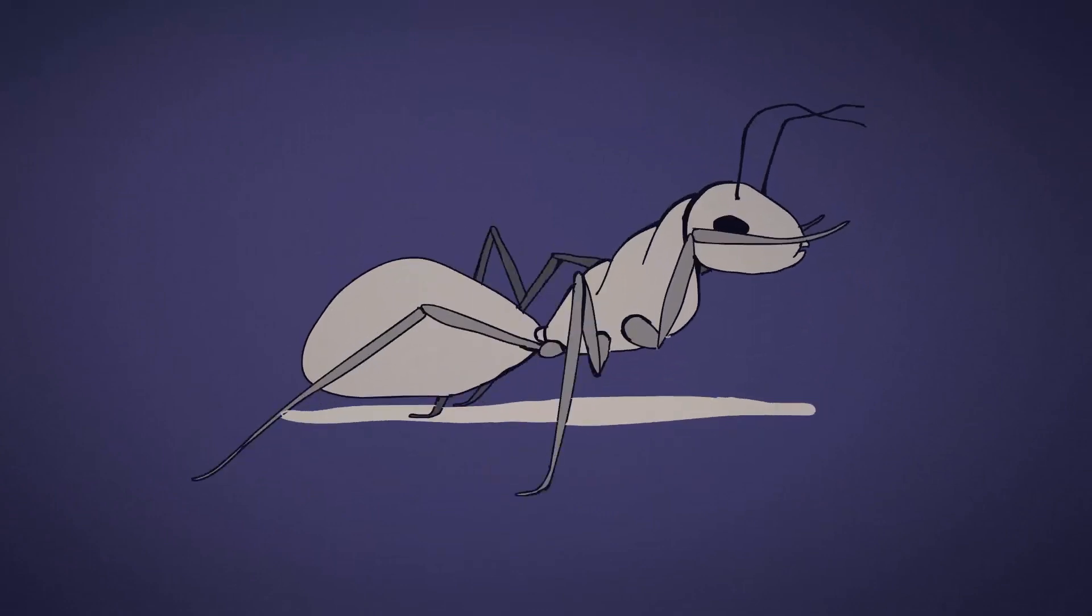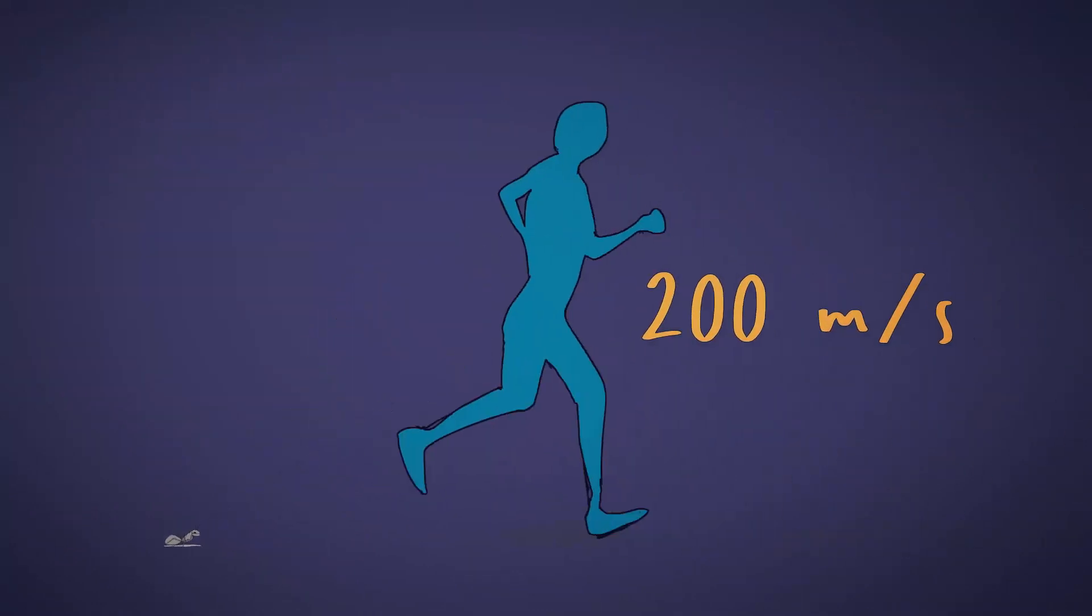This is nearly the walking pace of a human being, and compared to its body size, would correspond to a speed of about 200 m per second, 720 km per hour, for a 180 cm tall human runner.